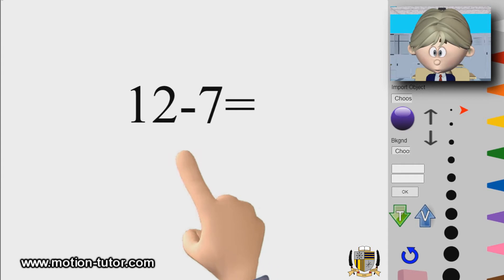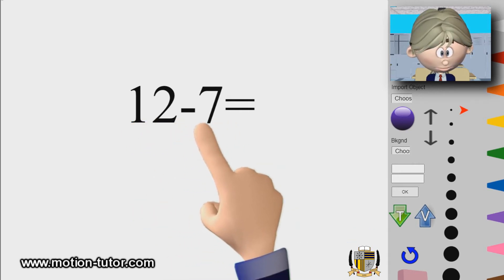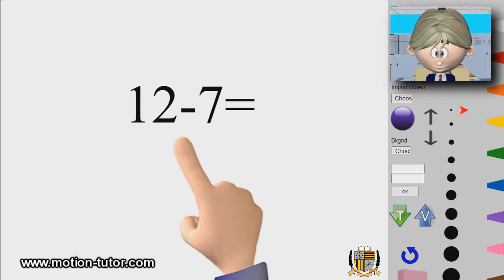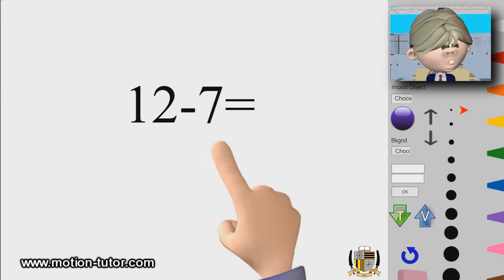Let's take a look at 12 minus 7. Now this strategy is you can mentally think about how much do I need to go from 7 to 10, and then how much do I need to go even further from 10 until I arrive at this 12. That would be the answer of 12 minus 7.